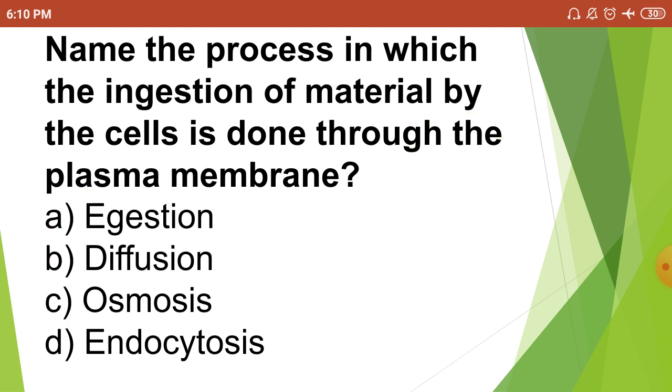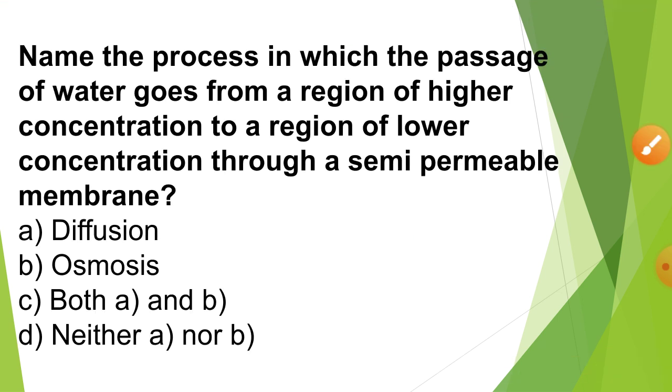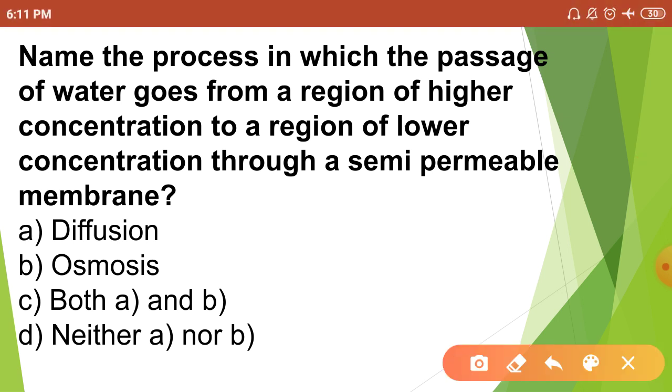What is endocytosis? Next question: The process where water goes from a region of higher concentration to a region of lower concentration through a semi-permeable membrane.